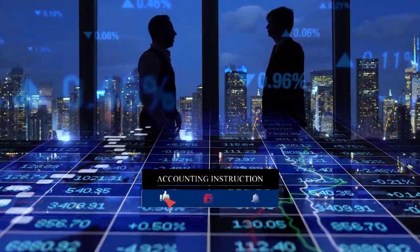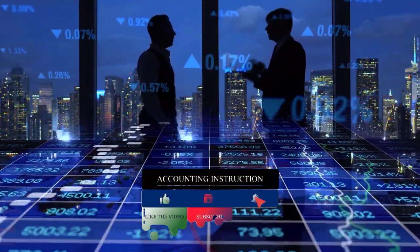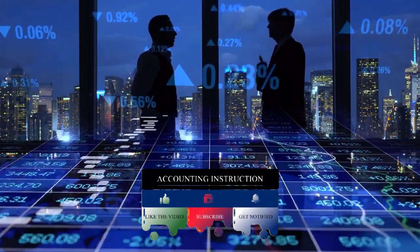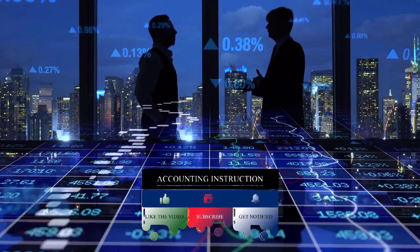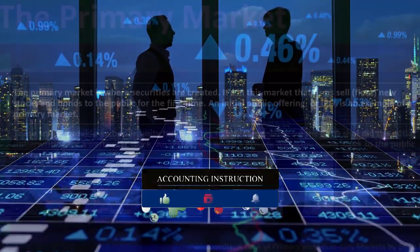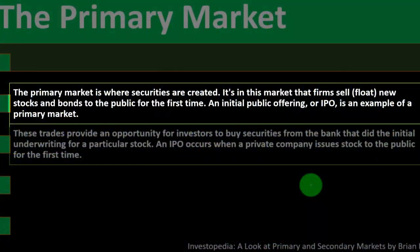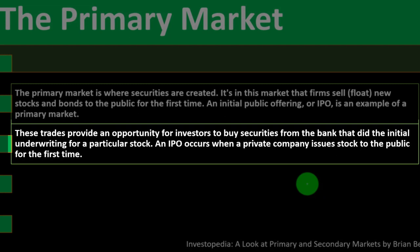Corporations may not be publicly traded or listed on an exchange. If they decide to go on the exchange, they're generally trying to raise capital through the issuance of stocks, and the first time they do that is the initial public offering — the IPO. These trades provide an opportunity for investors to buy securities from the bank that did the initial underwriting for that particular stock.